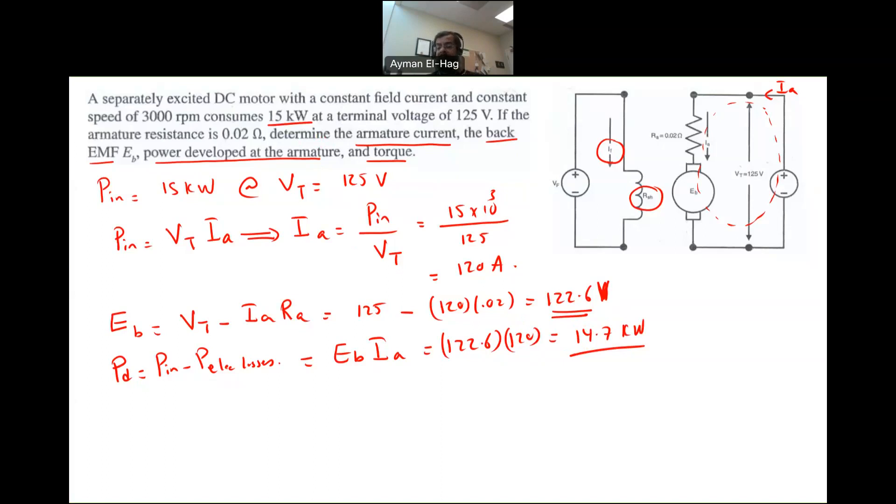So this P developed has to be always less than the PN. Now, if I ask you in the question, find the electrical losses, it will be basically 15 kilowatt minus 14.7, which is 0.3 kilowatt. But in this question, we don't ask you to find.